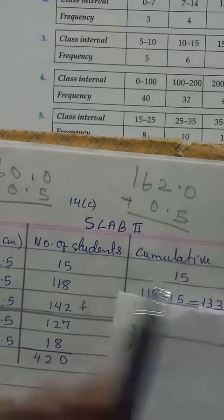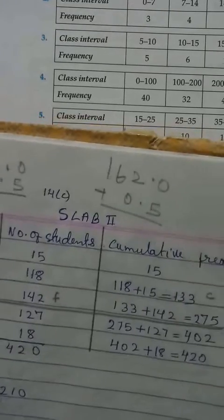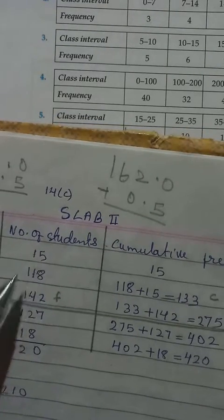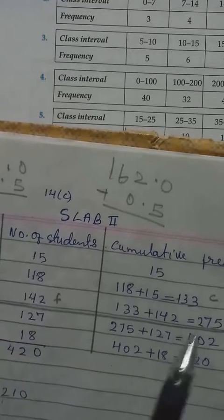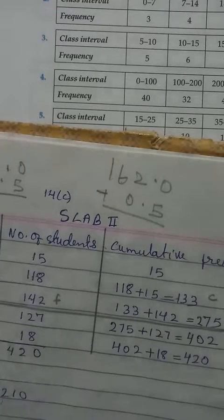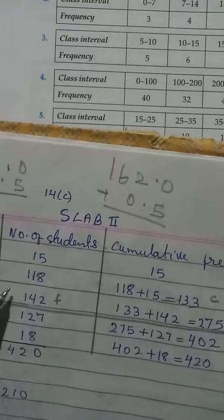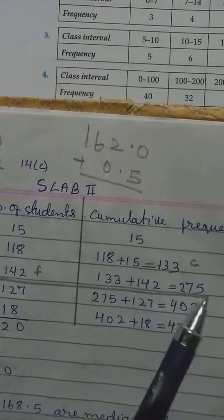So 15, let it remain 15. The first one. Then for the second one, you do 15 plus 118. You get 133. Then 133, you add with 142. You get 275.